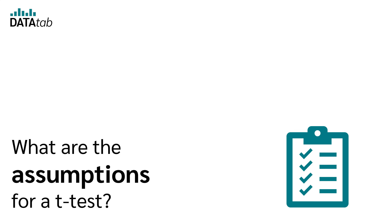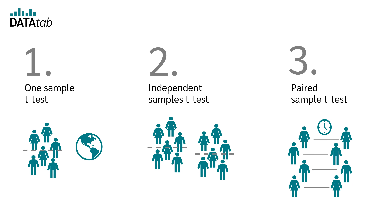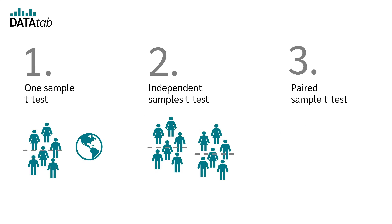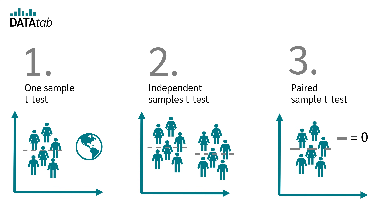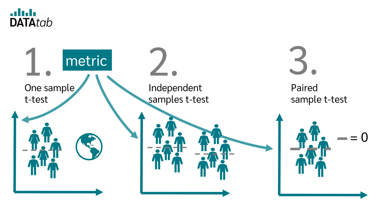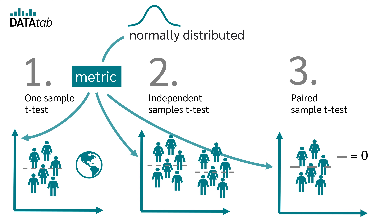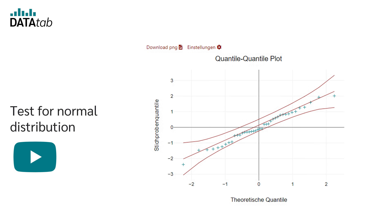What are the assumptions for a t-test? We first need a suitable sample. In the one-sample t-test we need a sample and the reference value; in the independent t-test, two independent samples; and in the paired t-test, a paired sample. The variable we are testing must be metric — examples include age, body weight, and income. A person's level of education, for example, is not a metric variable. In addition, the metric variable must be normally distributed in all three t-test variants. To learn how to test for normality, watch the video on the Test for Normal Distribution.